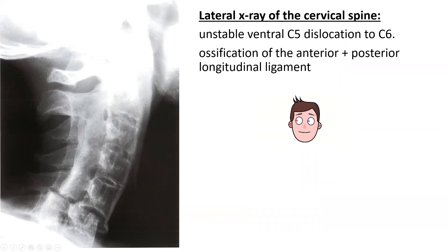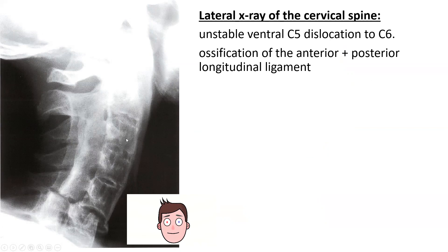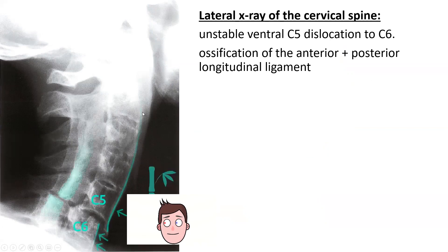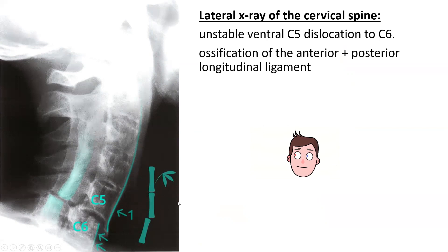Here is a lateral X-ray of the cervical spine showing C5 and C6 affected — C5 is dislocated and there's ossification of the anterior and posterior longitudinal ligaments. The green highlights point out the ligament ossification and the anterior dislocation of C5.